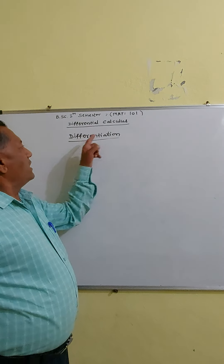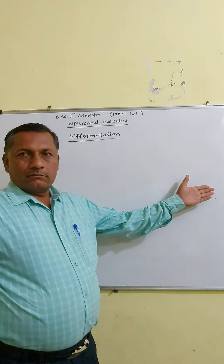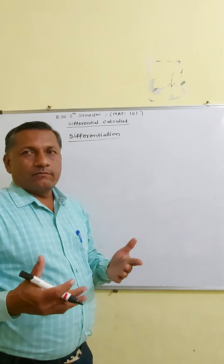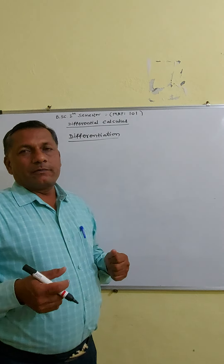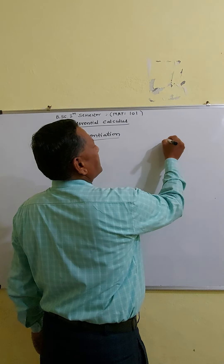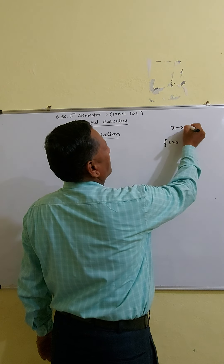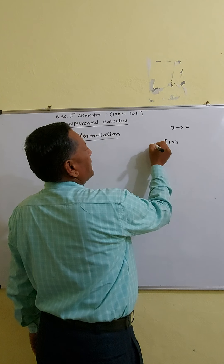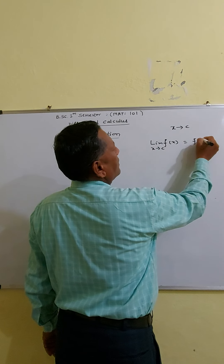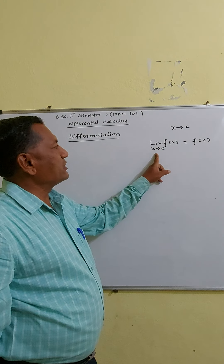Now you will learn differentiation. You will learn the limit of a function and the algebra of limits. You will also learn the derivative of a function and continuous functions. That is, if F(x) is a function, we say F is continuous at some point x = C if the limit of F(x) as x tends to C is equal to F(C). Meaning, the value of the function F(C) equals the limit of F(x) as x tends to C.